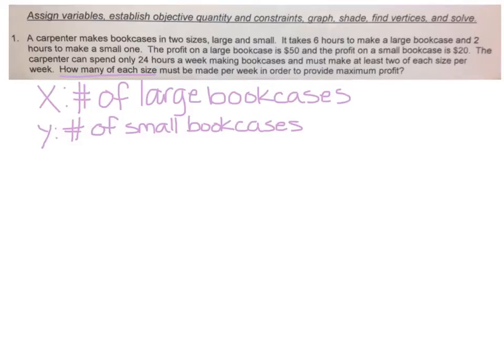So we now have our variables. We need to establish an objective quantity. We're trying to get profit, maximum profit. So let's let the objective quantity be P, which we have to define. P is profit. And then write our objective quantity, P equals. The profit is going to be $50 for each large bookcase, so 50x, and $20 for each small bookcase, so plus 20y. So there's your objective statement right there.